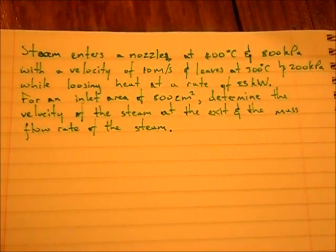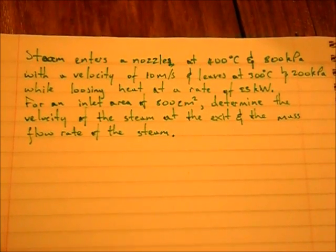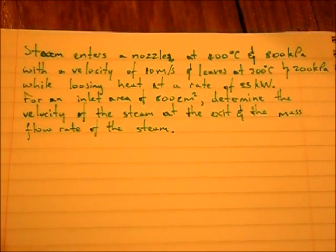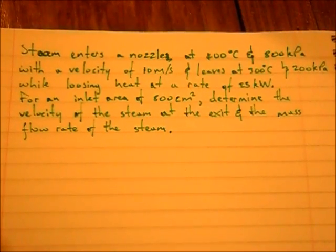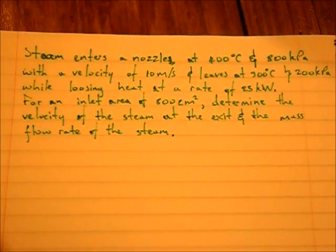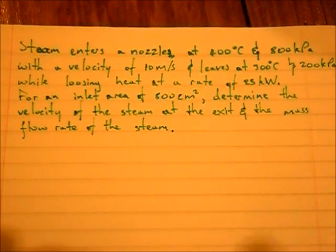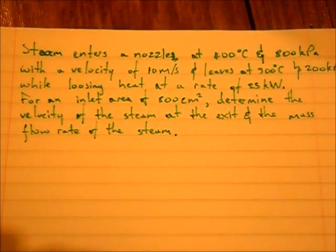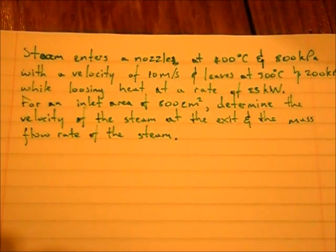Okay then, I will be working on another tutorial question and this one is on nozzles. It's from Thermodynamics 1 and the question reads: steam enters a nozzle at 400 degrees Celsius and 800 kilopascals with a velocity of 10 meters per second and leaves at 300 degrees Celsius and 200 kilopascals while losing heat at a rate of 25 kilowatts for an inlet area of 800 centimeters squared. Determine the velocity of the steam at the exit and the mass flow rate of the steam.